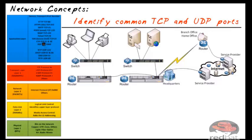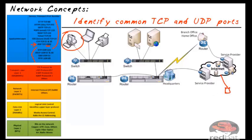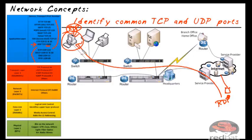One last TCP protocol: Remote Desktop Protocol (RDP). The protocols listed so far are all TCP; the ones coming up are UDP. RDP is used a lot. Let's say at work you want to connect from home to your work computer. If policy allows, you enable the Remote Desktop service on your PC. From home, you run the Remote Desktop application, which makes a request to that computer on well-known port 3389. These are the common well-known ports for TCP.